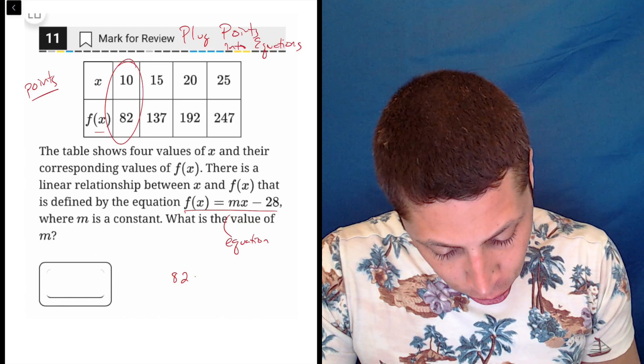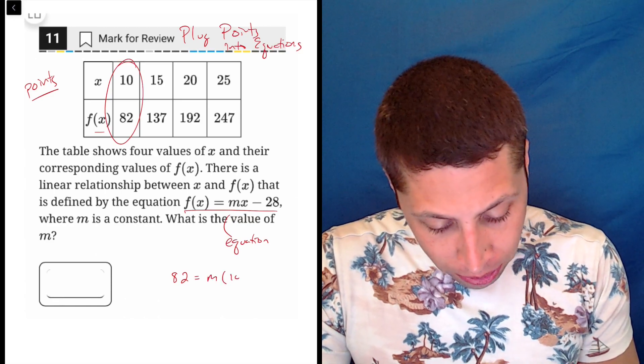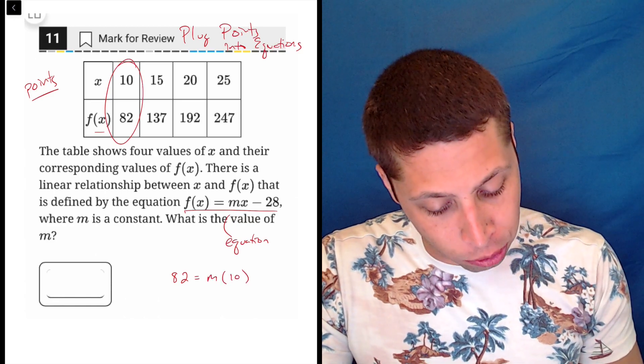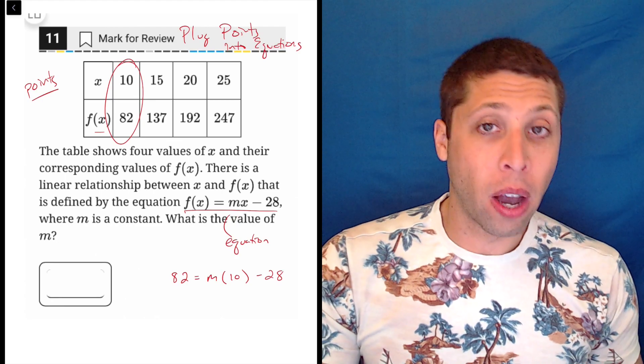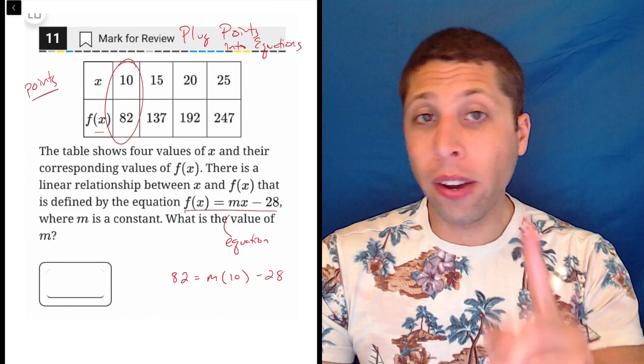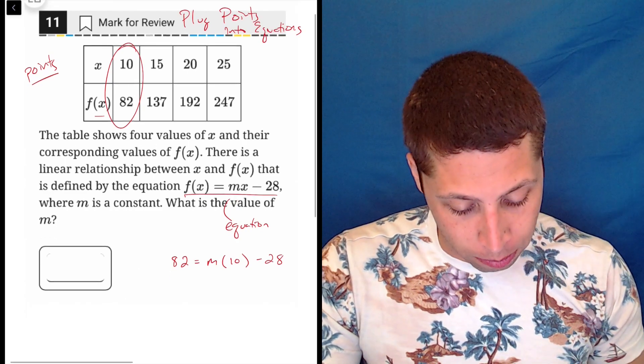So 82 is my f(x), so 82, we don't know m, but we know 10 is the value of x that goes with that 82. So there we go. Now we have an equation, and it has one variable, which lets us solve for that variable.